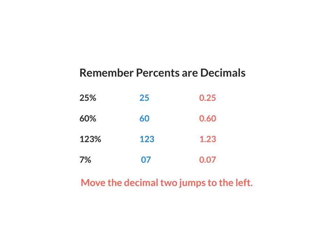Remember, percents are decimals. When I want to convert a percent to a decimal, all I do is take the decimal and move two places to the left. So I'm going to convert 25% to a decimal. I know that my decimal is at the very end, so I'm going to move two places to the left — one, two. My answer is 0.25.